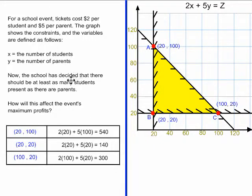But the school has decided to introduce a new constraint. The school has decided there should be at least as many students present as there are parents. That changes things. What we have to do next is make an inequality that matches this new constraint. My new constraint is X greater than or equal to Y.